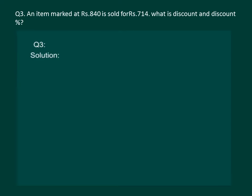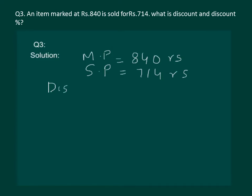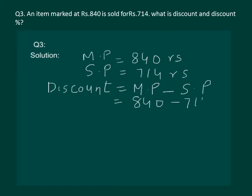It is given that the marked price of the item is rupees 840, while the sale price is rupees 714, and we are required to calculate the discount and the discount percentage. The formula for discount is: discount equals marked price minus sale price, which would be 840 minus 714, and it comes out to be rupees 126.